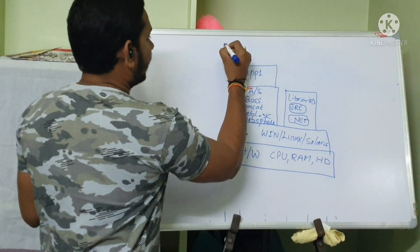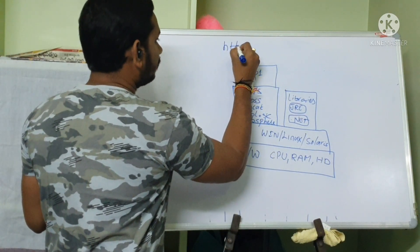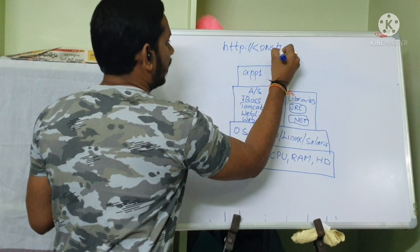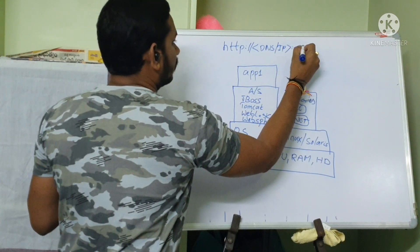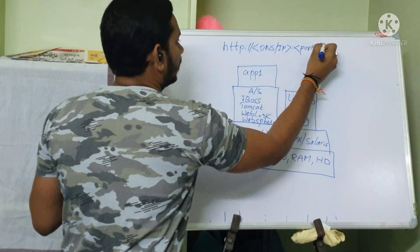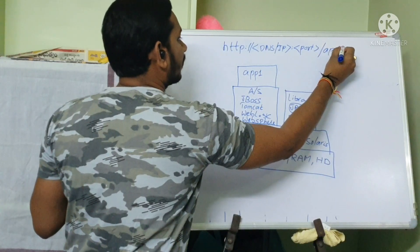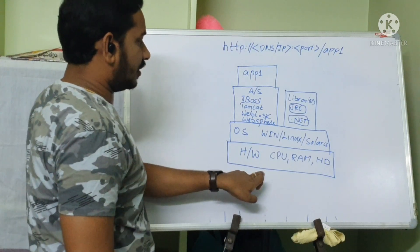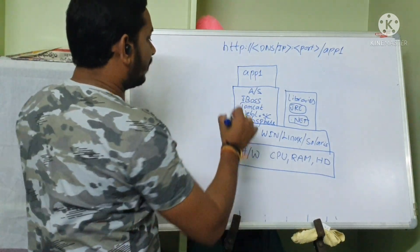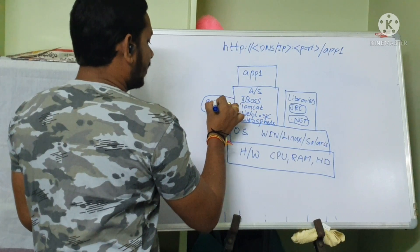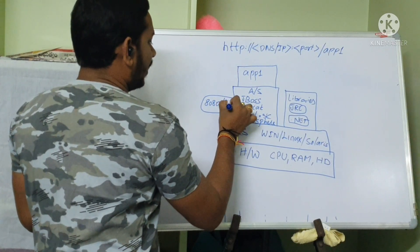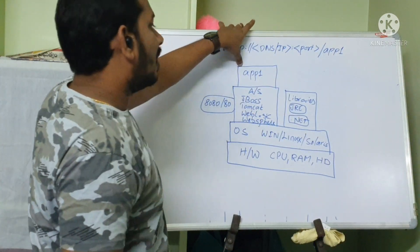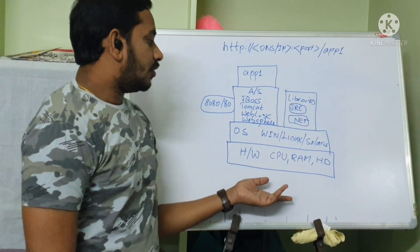To access this application, you use an HTTP DNS or IP address with a port number — something like http://DNS-or-IP:8080/app1. The request reaches the server, the application server running on port 8080 (or port 80) handles it, and you get the content back in your browser.